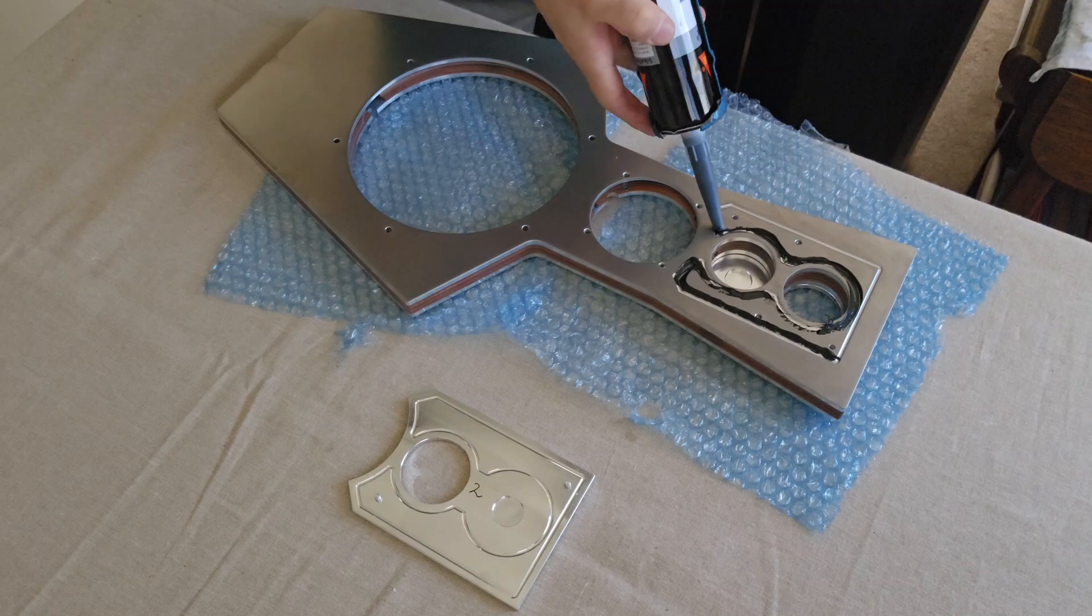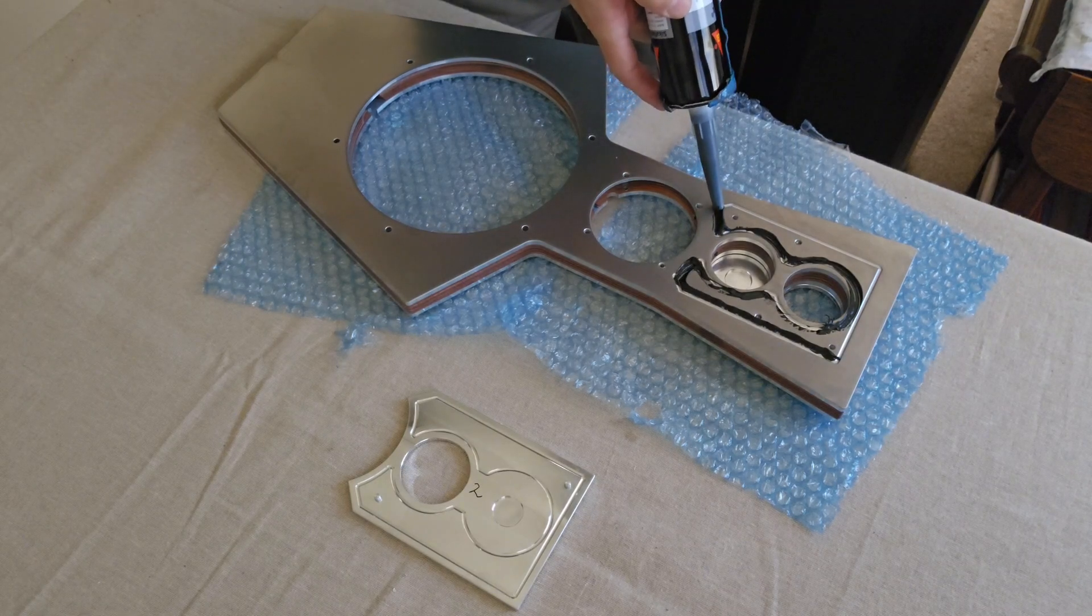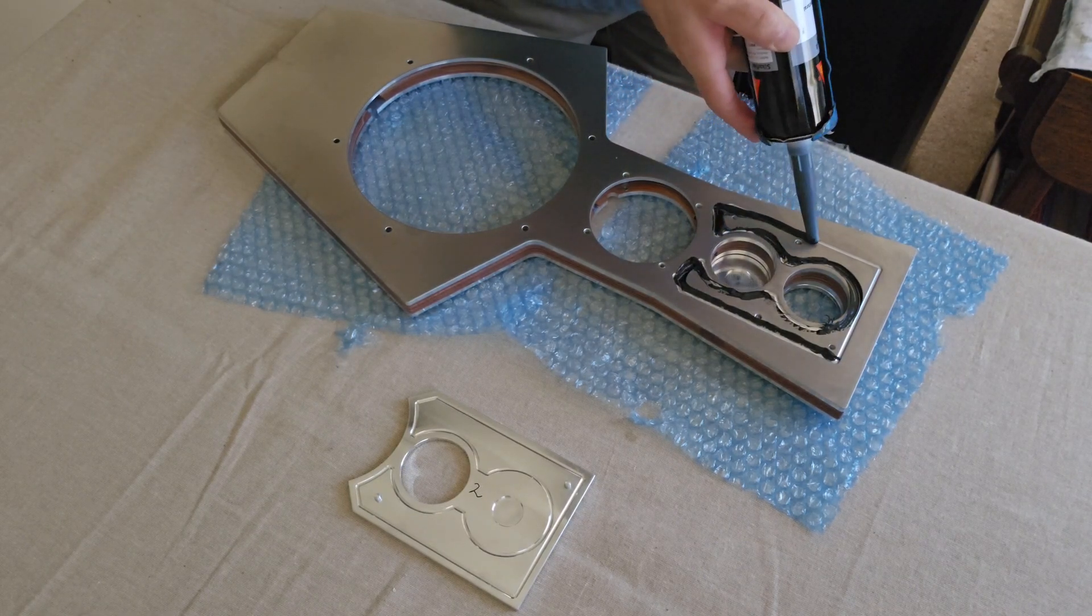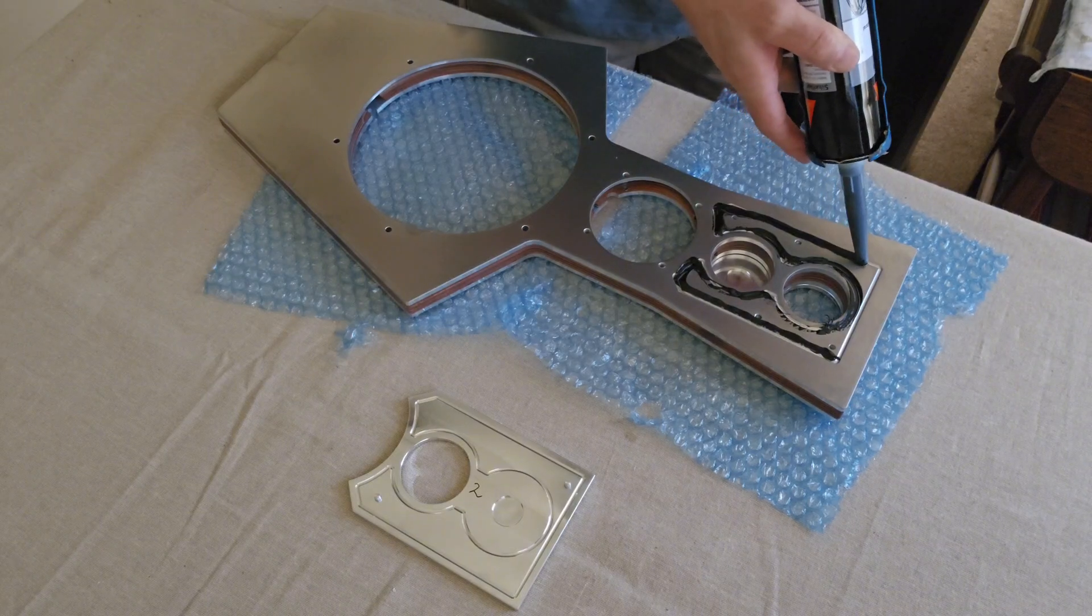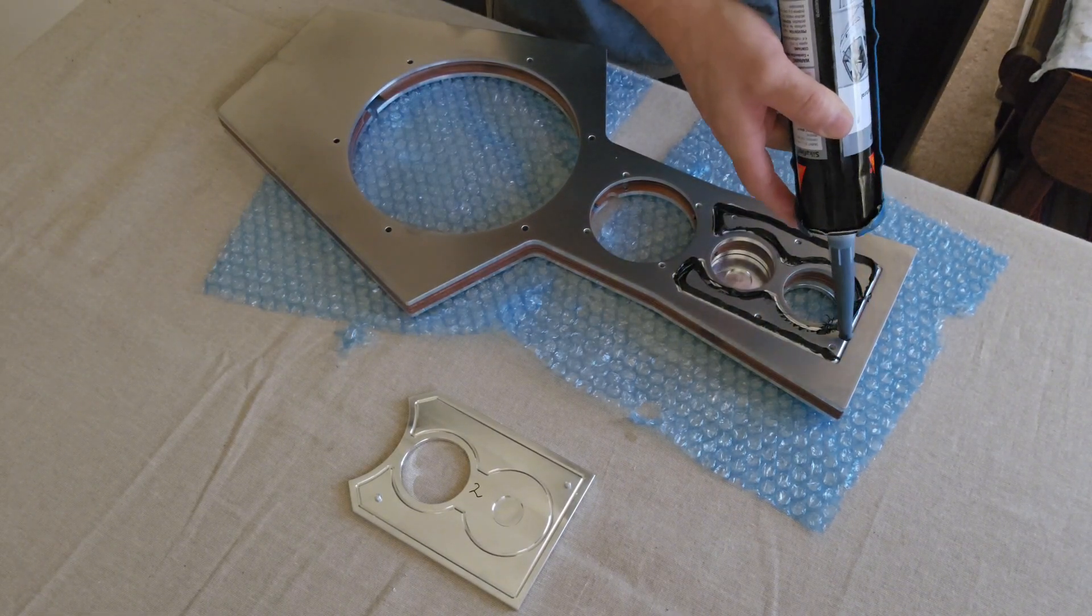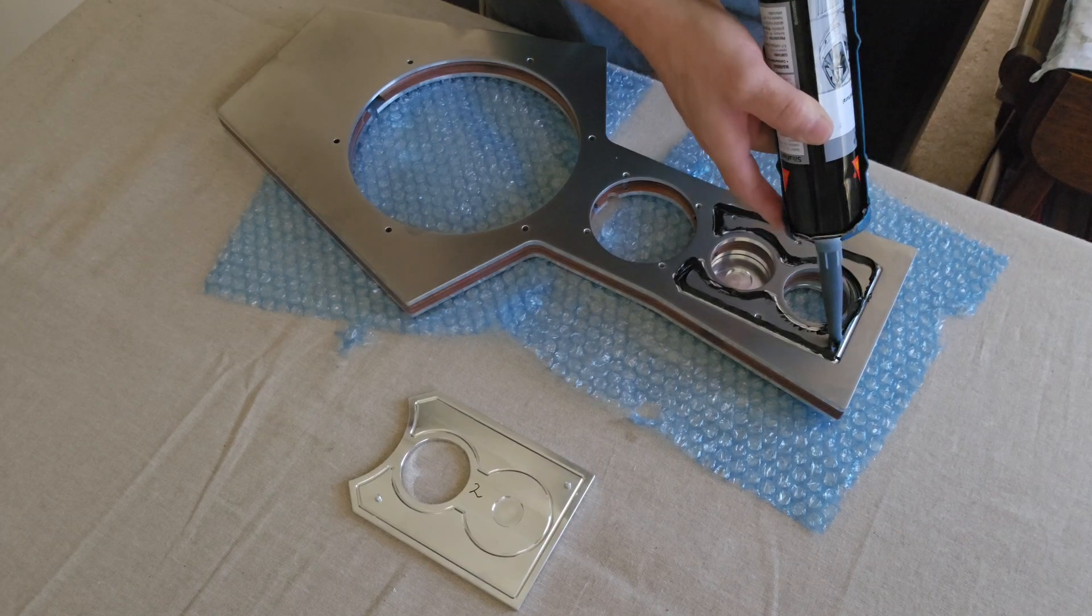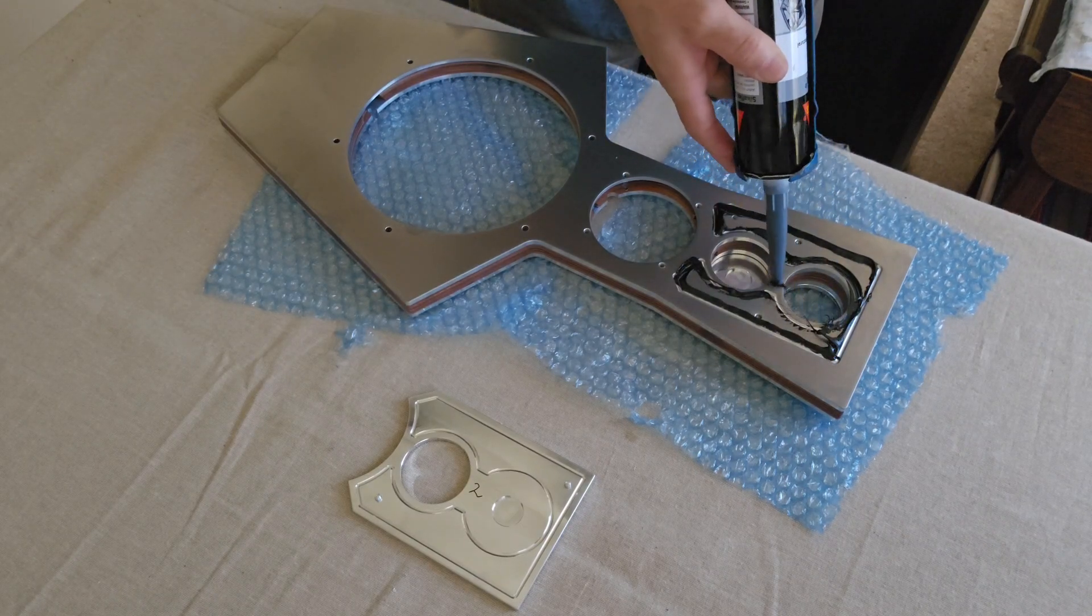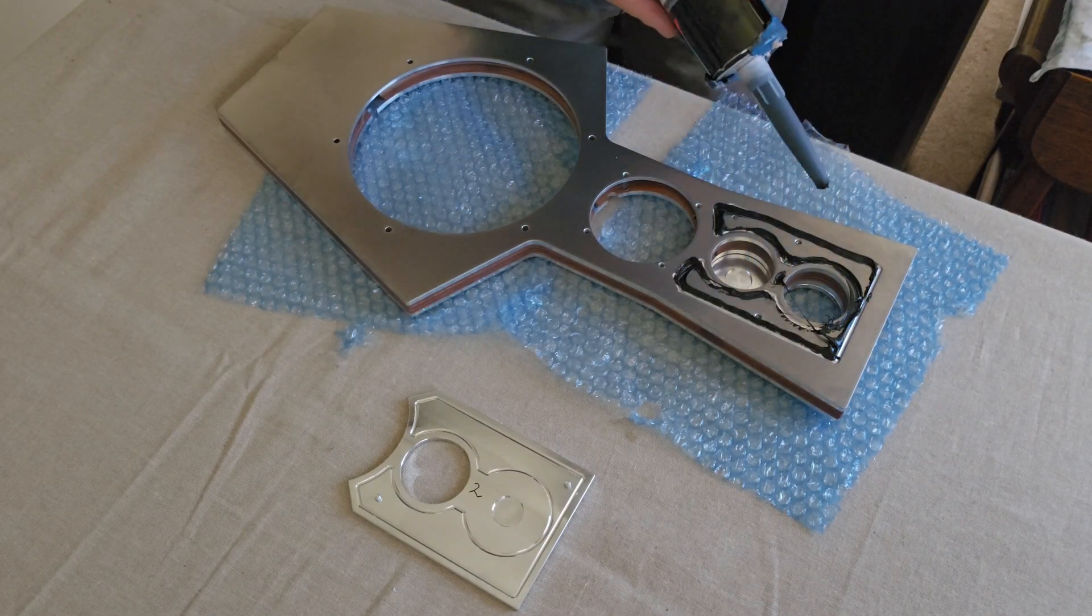We don't want excessive glue here to the point where we have anything oozing out. It's just a matter of getting a nice thin smear, controlling the material as it comes out of the gun, so that we get exactly what we need here and essentially no more than that.